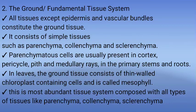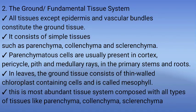The second type of tissue system is the ground or fundamental tissue system. All tissues except epidermis and vascular bundles constitute the ground tissue. It consists of simple tissues such as parenchyma, colenchyma, and sclerenchyma. Parenchyma cells are usually present in the cortex, pericycle, pith or medulla, and medullary rays in the primary stems and roots. In leaves, the ground tissue consists of thin-walled, chloroplast-containing cells and is called mesophyll. The fundamental tissue system is the most abundant tissue system in the plant body.